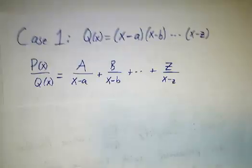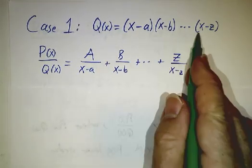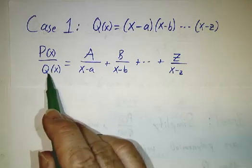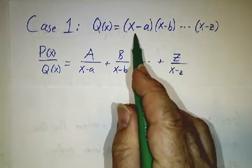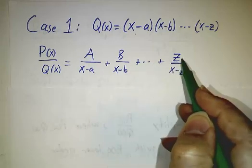So the deal is that whenever that Q can be written as a product of terms, then something over Q can always be written as a constant over the first term plus a constant over the second term all the way out to a constant over the last term.